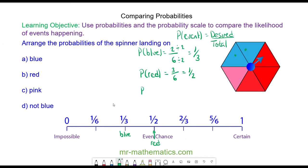The probability of landing on a pink, there is one section which is desired out of the six in total, so this would be pink.